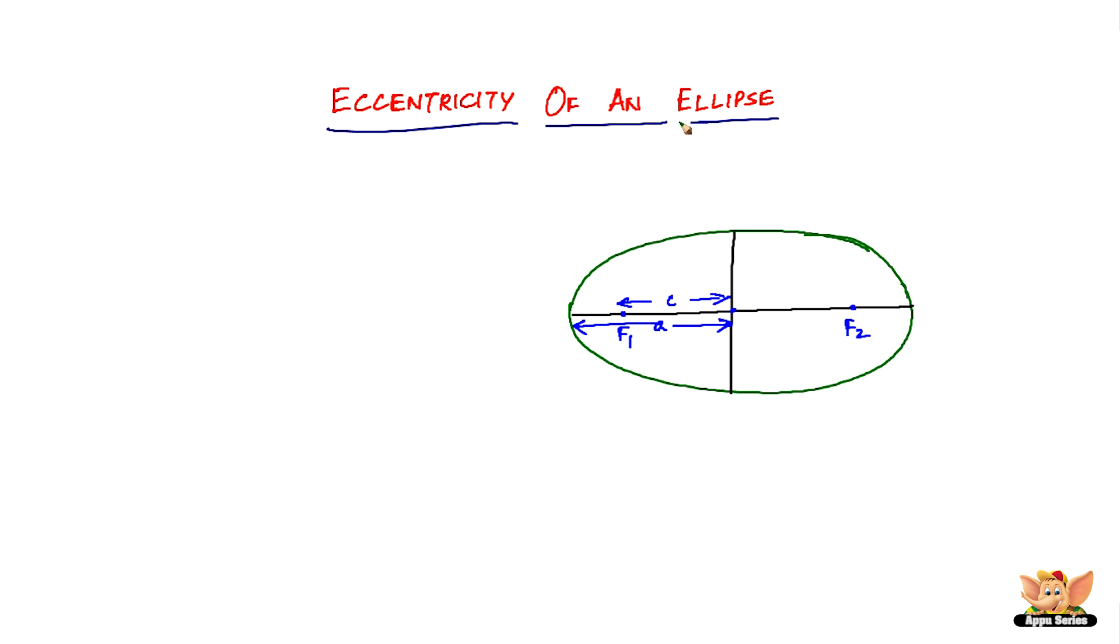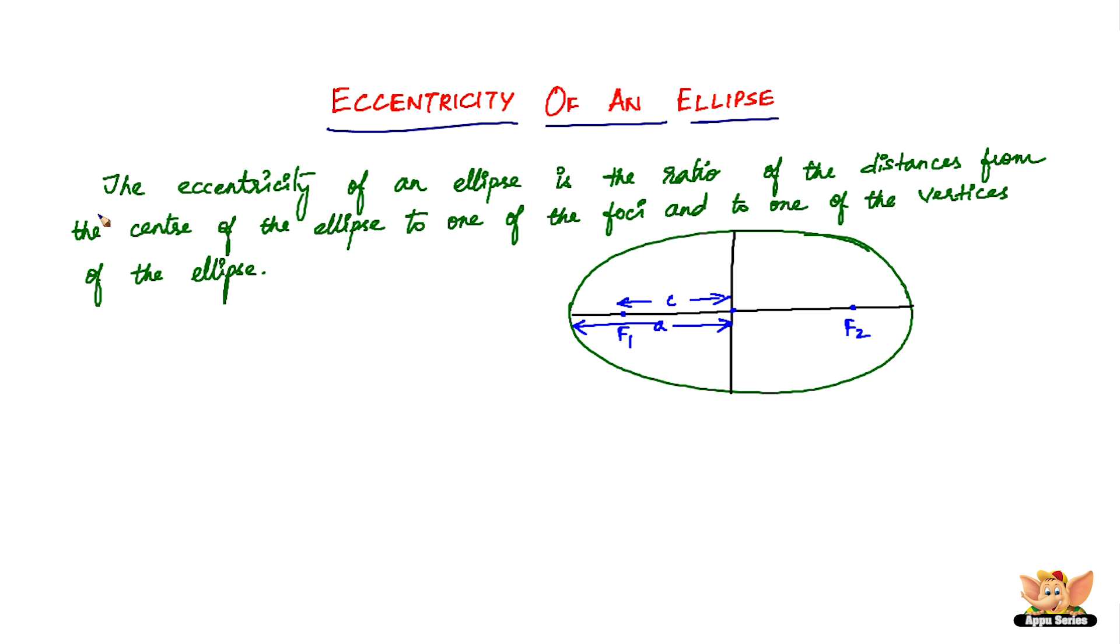Let us define eccentricity of an ellipse. Here is the definition: The eccentricity of an ellipse is the ratio of the distances from the center of an ellipse to one of the foci and to one of the vertices of the ellipse. Eccentricity is denoted by the letter e, small e, and e equals c by a.